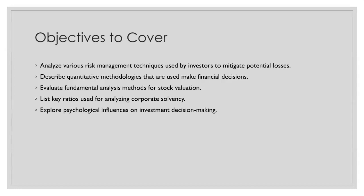Next, we're going to list some key ratios used for analyzing corporate solvency — that is, a company's ability to pay its debts. Ratios such as the debt-to-equity ratio, current ratio, and interest coverage ratio are indicators of a company's ability to meet its financial obligations and manage debt. These ratios assess the company's liquidity, leverage (meaning debt), and profitability, providing insights into its financial stability and risk profile.